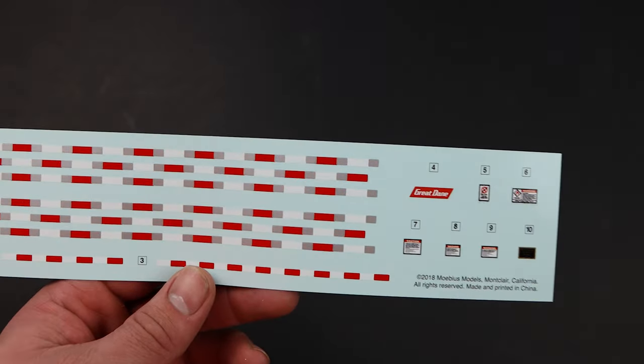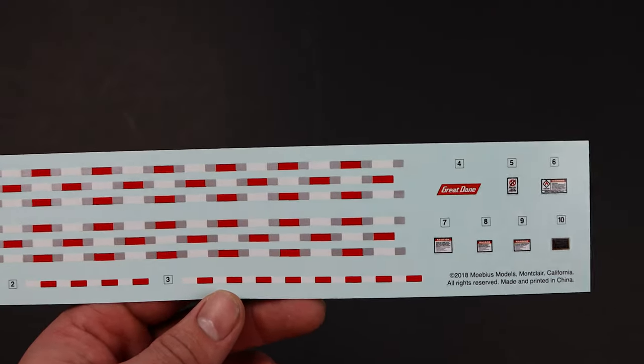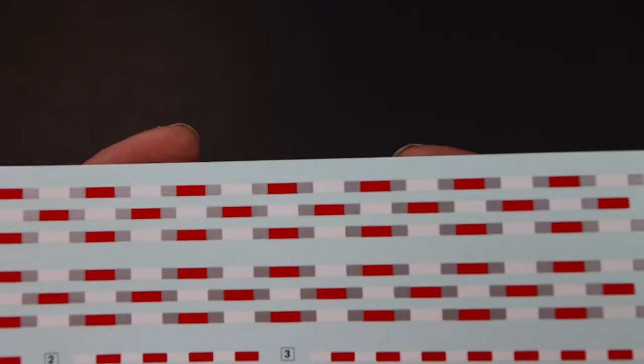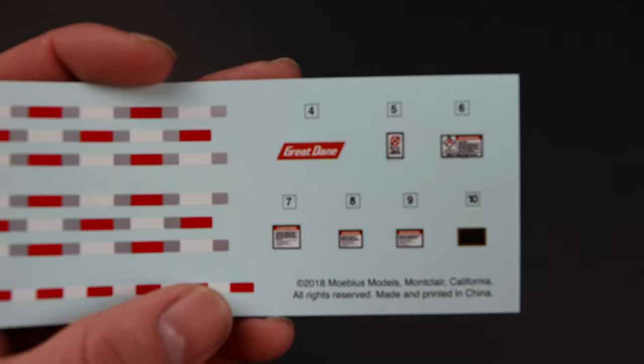And then, the other decal sheet has the reflective tape that goes down the sides, as well as the corners. And it looks pretty good. I mean, I think it might just be me, but I do believe that it is just ever so slightly, the grays are, the gray boxes are a little whiter than the red and the white stripes, but it could just be me. And then, down here, we have some markings, and they are not very legible. I mean, you can read the big text, but the small text is, it's lost. But, that's fine by me. You know, it'll still look great.